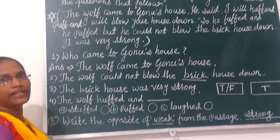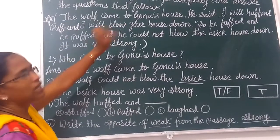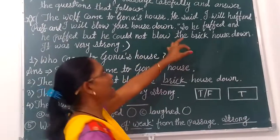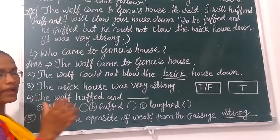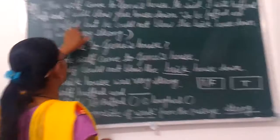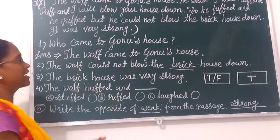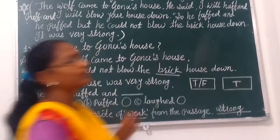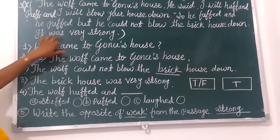This passage we discussed in the lesson also. I will say it now. The wolf came to Bono's house. He said, 'I will puff and puff and I will blow your house down.' So he puffed and he puffed, but he could not blow it down. It was very strong.